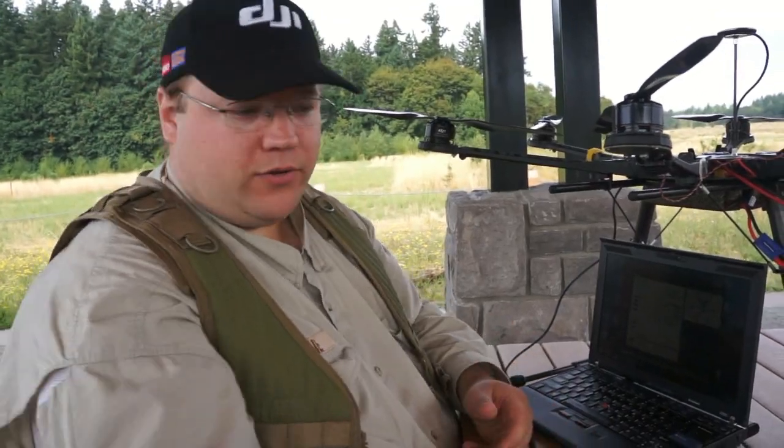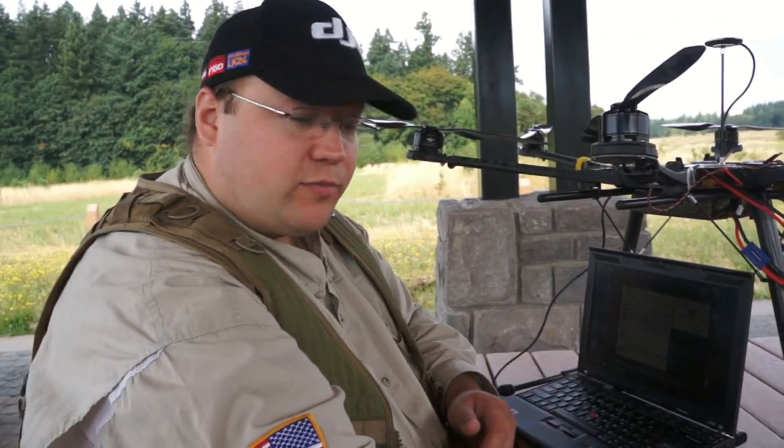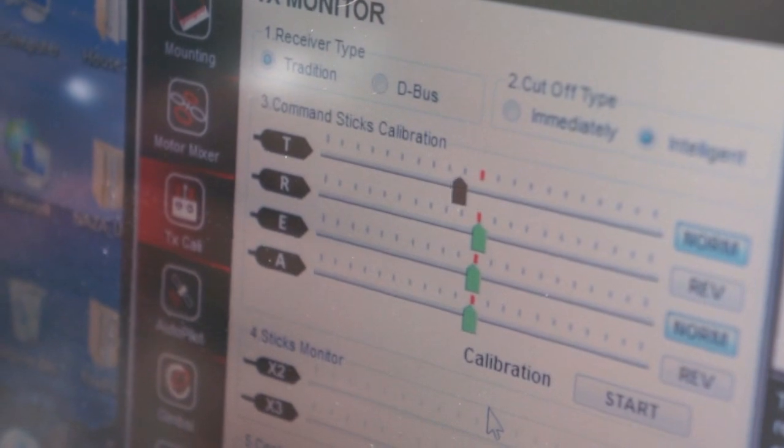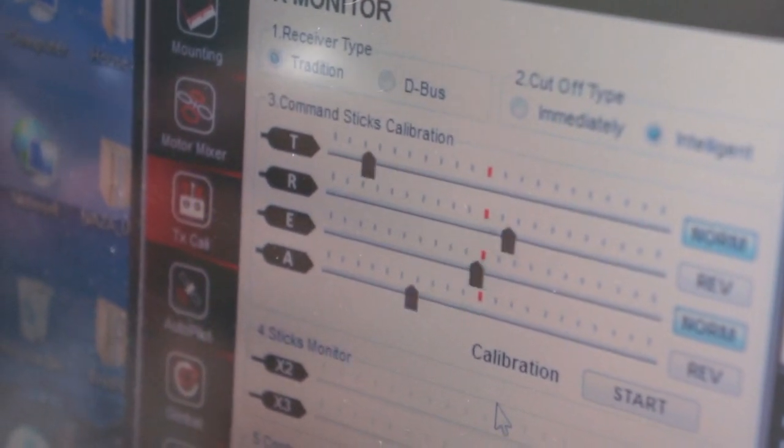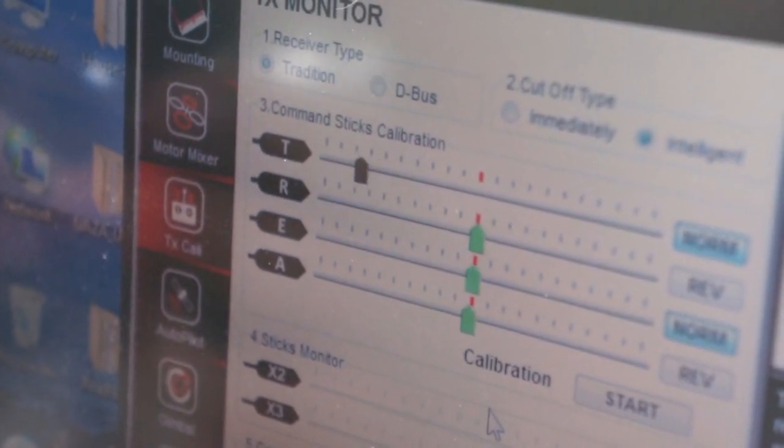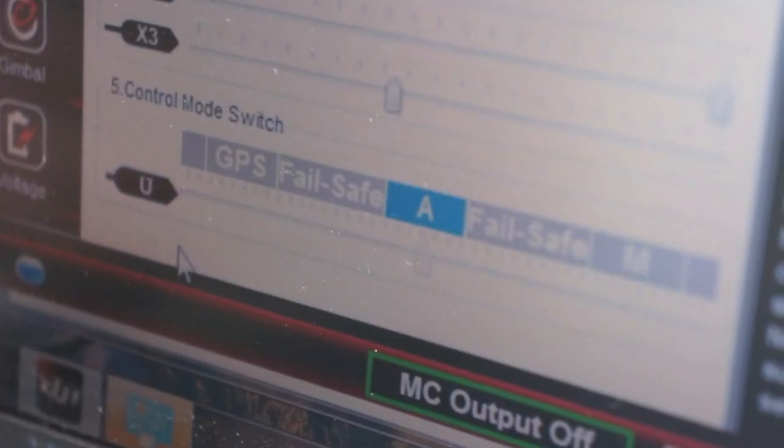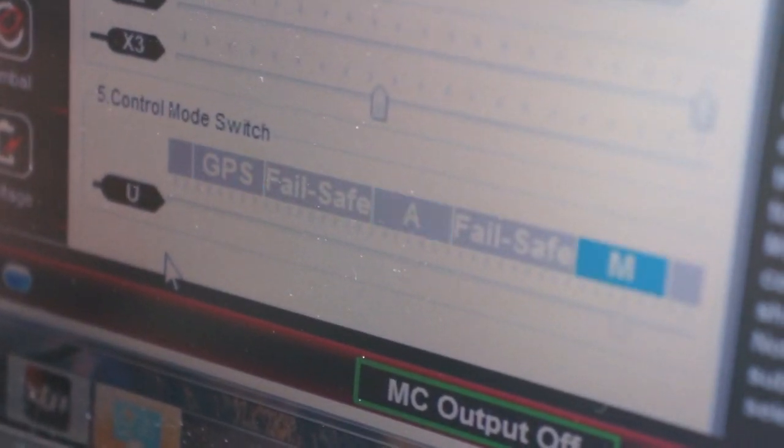So the next page we're going to use is transmitter calibration. This is one of the most used pages, of course, when you set up your transmitter the first time. You center all your controls through the green, and you can check to see which direction they move in, whether you have to reverse them or not. Also, you can set your failsafe here. This is where they failsafe, GPS, and manual mode.